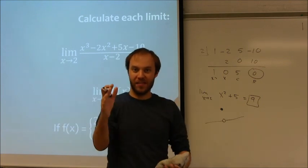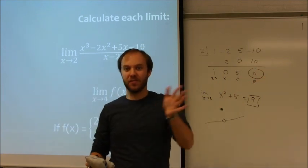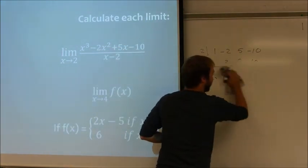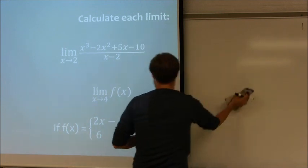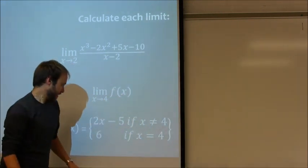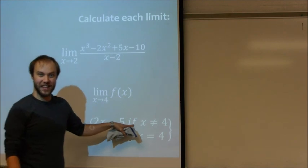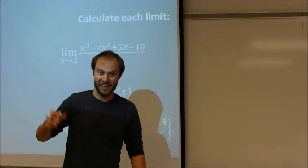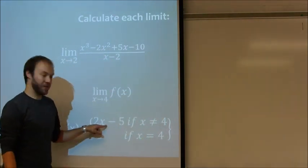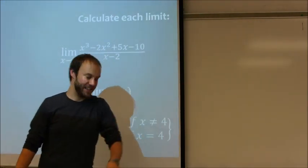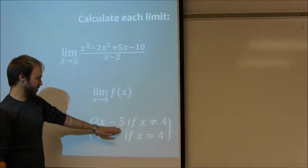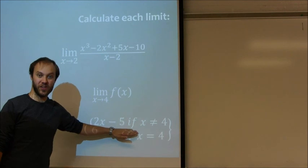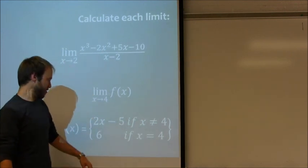So the thing that's tricky for people to remember is you don't look at that one singular value. You look at what it's coming into from the left side. You look at what it's coming into from the right side. And that's what's happening. So the important thing to recognize in this case is for all values where x is not equal to 4, you're using this function right here. So when I'm coming in from the left-hand side, as I get closer and closer and closer, I'm using this equation. When I come in from the right-hand side, as I get closer and closer and closer, I'm using this equation as well.